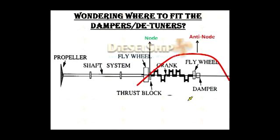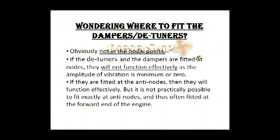You must be wondering where to fit the dampers and detuners. Looking at the shafting diagram again, you can see the vibration curve shown with the red line — the thrust block is located at the node or near node. In the same manner, the vibration curve goes up and the damper is fitted at the antinode or near-antinodal point wherever possible. The main reason is that if you fit the detuner or damper on a node, it will not be effective or will not dampen the vibration properly. So, detuners and dampers are fitted at antinodes so that they can dampen the vibrations effectively.